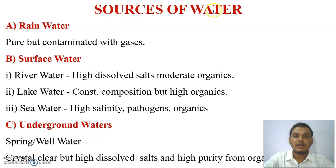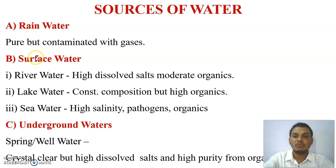To summarize the sources of water: there are three main sources — rain water, surface water, and underground water. Out of these, rain water and surface water are impure forms, while only underground water is the purest form.